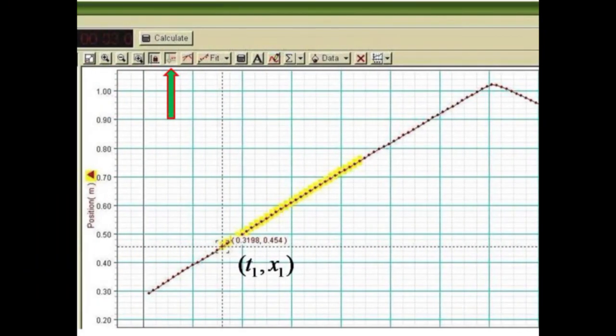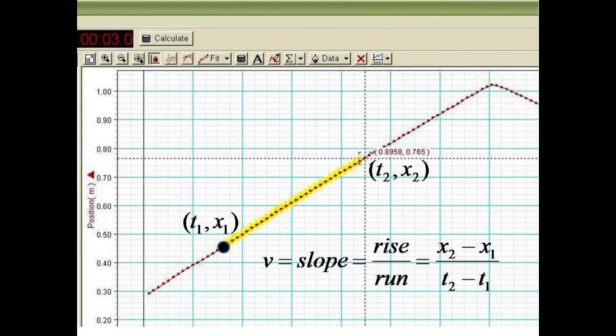Using the XY tool, you can identify the X and Y values of any point on your graphs. Here we use it to find the beginning time and position of our cart. Please note the ordered pair shows time first and position second. We then determine the ending time and position by moving the XY tool.